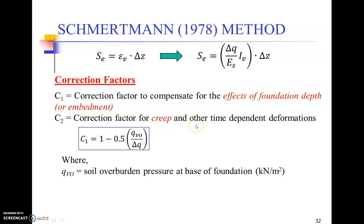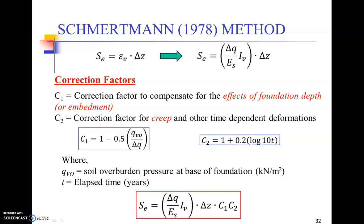C2 is the correction factor for creep and other time-dependent deformations. It is given by this very simple expression: 1 + 0.2 log(10t), where t is the time in years. So you want to see it after 10 years, 20 years, or 30 years, input that value.